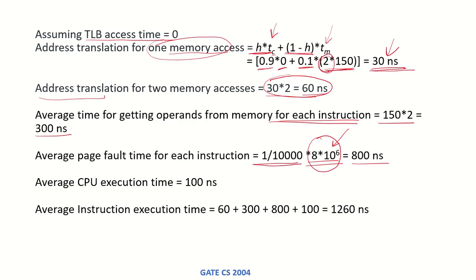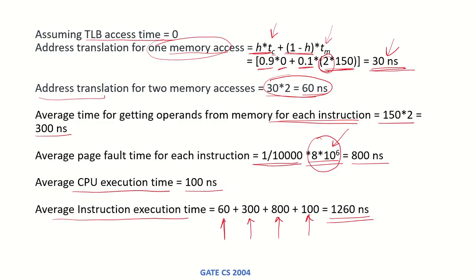The average CPU execution time per instruction is given as 100 nanoseconds. Adding all components — address translation (60ns), operand fetch (300ns), page fault handling (800ns), and CPU execution (100ns) — the effective average instruction execution time comes out to be 1260 nanoseconds.